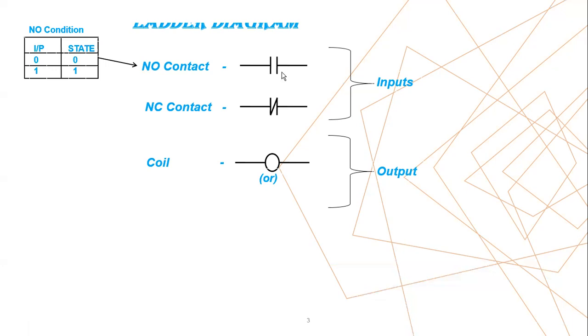So where we have to use this NO contact? In your program, if you want to start a motor or start a pump, then you have to use this NO contact symbol. Similarly, NC contact - NC means normally closed contact.